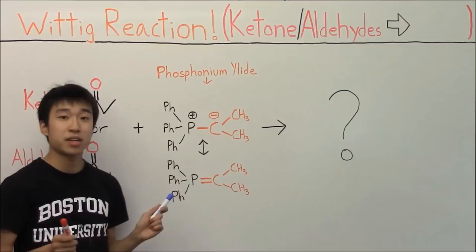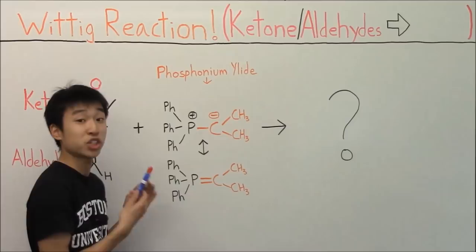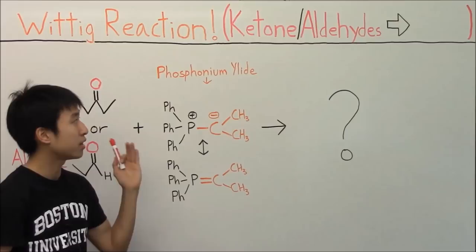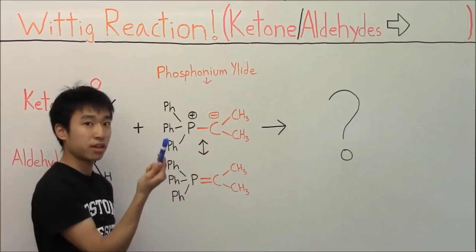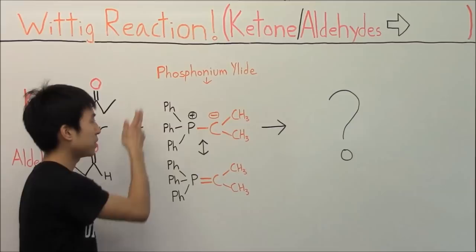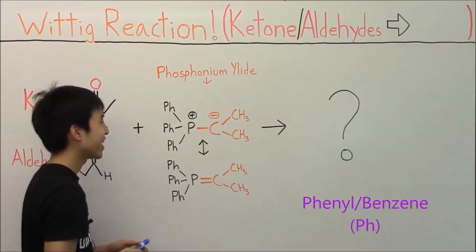A ylid is basically just a molecule with a positive charge and a negative charge, and the atoms that contain these charges must be right next to each other, on adjacent atoms. Because this specific type of ylid for the Wittig reaction is called a phosphonium ylid, the positive charge is on the phosphorus and you have a negative charge on the carbon. A phosphonium ylid will usually contain three benzene rings or phenyl groups on it — that's why I abbreviated it as Ph.